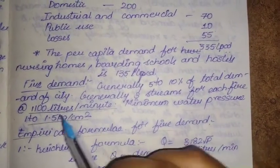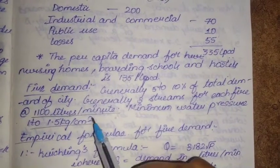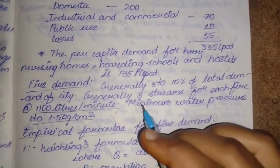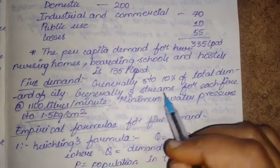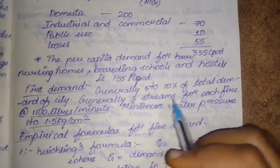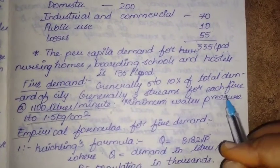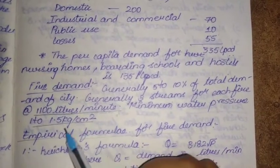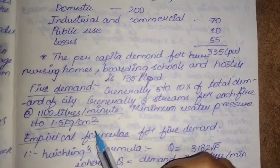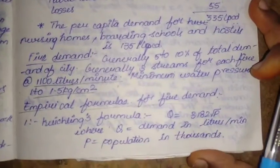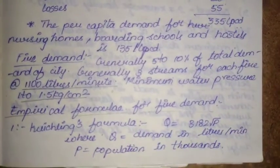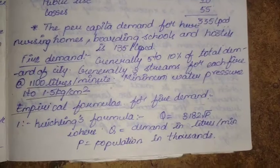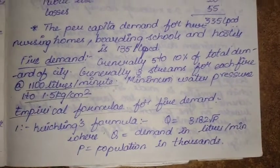Generally, three streams per fire at 1100 liters per minute are considered. The minimum water pressure to be maintained is 1 to 1.5 kg per centimeter square. Now coming to the empirical formulae for fire demand, the first one is the Kuichling formula: Q = 3182 × √P.